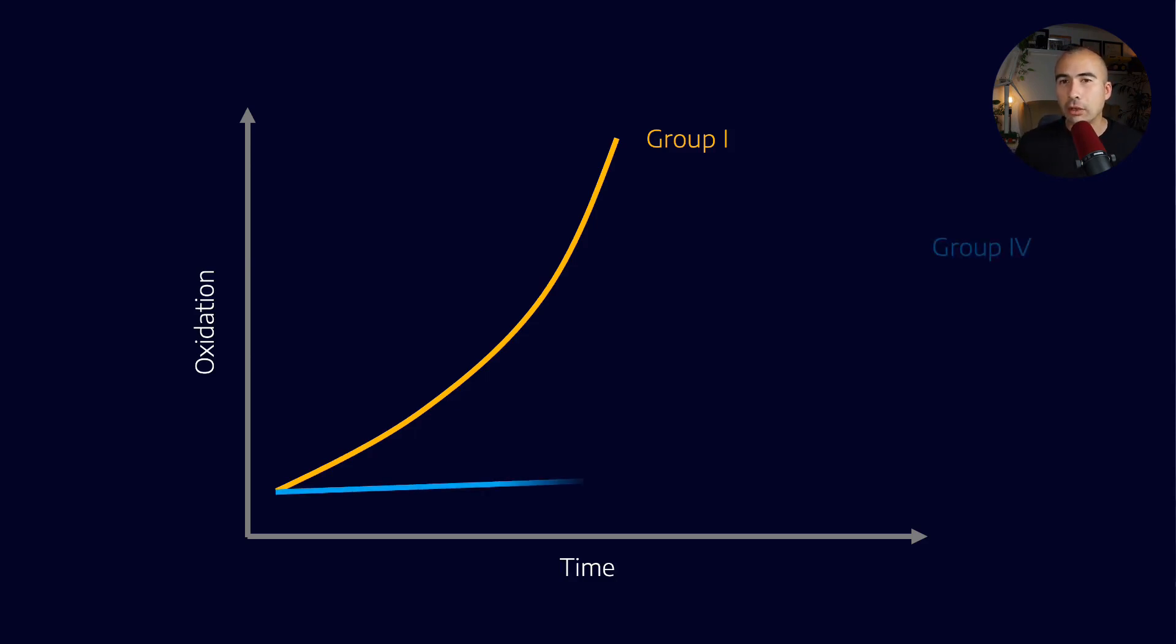Group 4 PAOs tend to show a much flatter profile for most of the oil life, and then a sharp inflection point and a sudden increase. So what's actually happening at these inflection points? What is happening there is when the antioxidant pack is completely depleted.